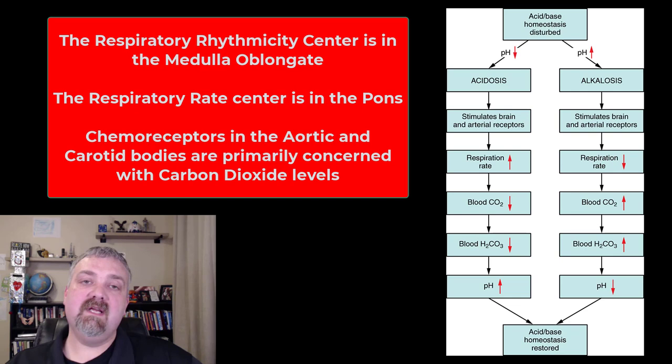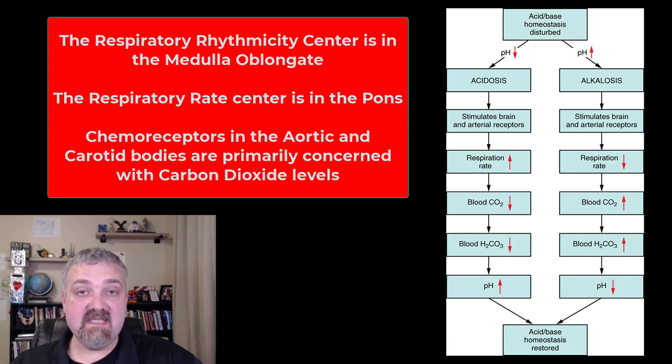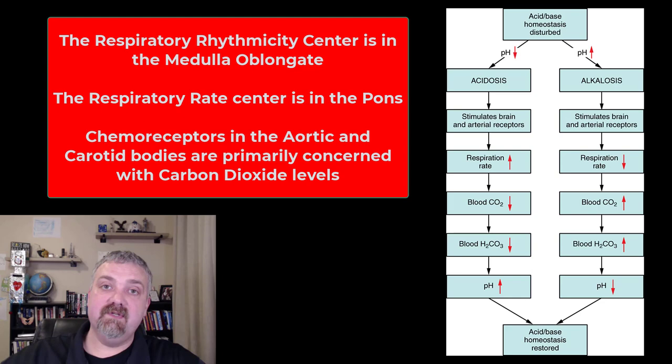Your body primarily controls your respiratory rate. The respiratory rate centers are in the pons of the brainstem, the arrhythmicity centers are in the medulla oblongata, but there are chemoreceptors in your aorta and your carotid arteries—they're basically pH sensors in a sense, but they're primarily monitoring carbon dioxide levels. Your brain is much more interested in carbon dioxide levels than oxygen levels. We have enough oxygen, we have extra oxygen—that's why we can go to higher altitudes. We have to make sure we keep the right amount of carbon dioxide. If we get rid of too much or too little, we're in trouble.